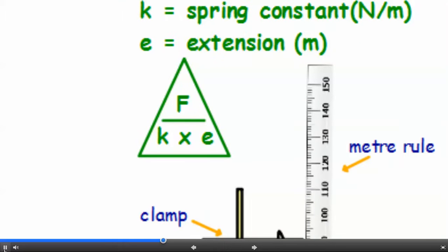This can be put into a triangle. K times e on the bottom, F on the top. Cover up the one you're looking for and the position of the other two tells you what to do.